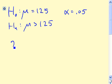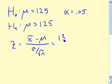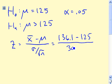The test statistic Z is x-bar minus mu, divided by sigma over the square root of n. So we have 136.1 minus 125, divided by 30 over the square root of the sample size 25. If we calculate this, we get 1.85.